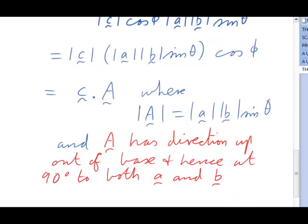OK, let's say that again. It's important. This quantity capital A is a vector whose magnitude is the length of little a times the length of little b times the sin of the angle between, and its direction is at 90 degrees to both the original little a and little b.